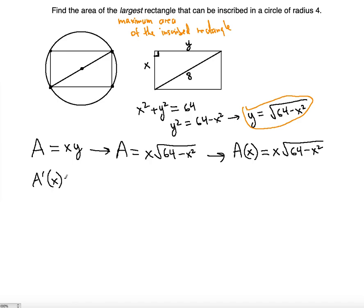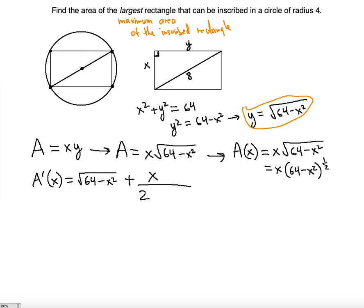Now we can take the derivative. Using the product rule, rewrite this as x times (64 minus x squared) to the one half. Differentiating: the first term gives 1 times the square root of 64 minus x squared. Then plus x untouched, times one half, times (64 minus x squared) to the negative one half — placing the square root in the denominator — times the derivative of the inside by the chain rule, which is negative 2x.